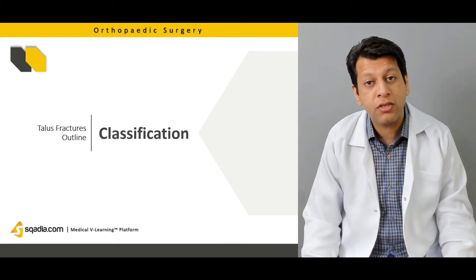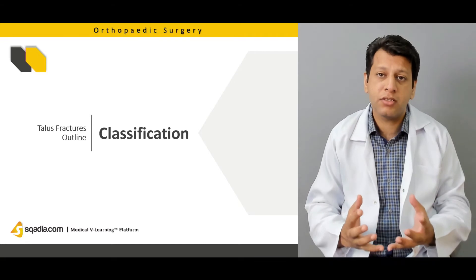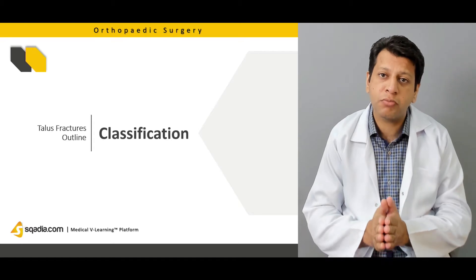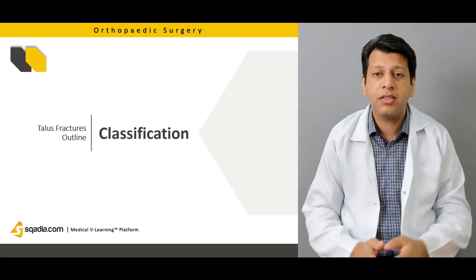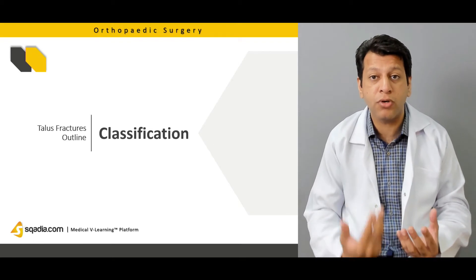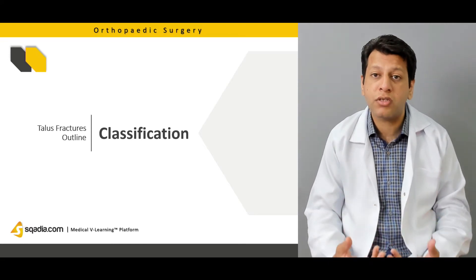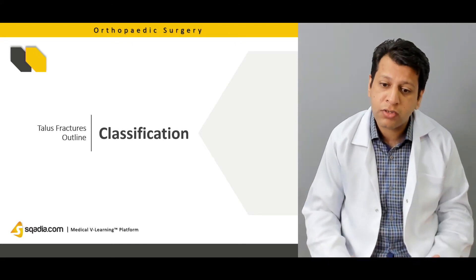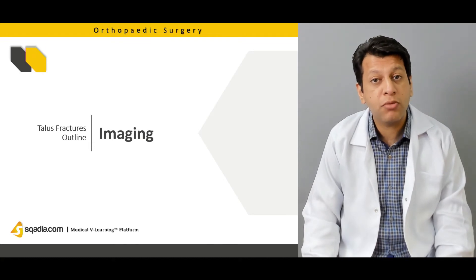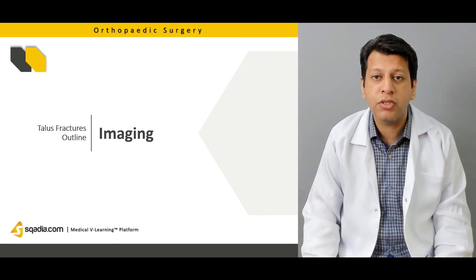Moving on to classification: the talus is divided into two entities. There is the Hawkins classification specifically for talus neck fractures. For other parts of the talus — the anterior, posterior, and lateral processes and the body — there are different classifications including the Mueller AO and OTS classifications. In this lecture, we will focus on the OTS classification for the body, and we will review how these fractures appear on X-ray.